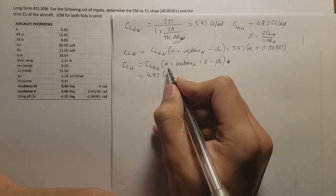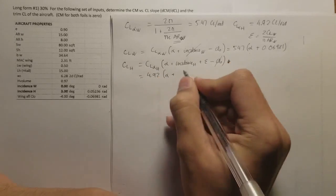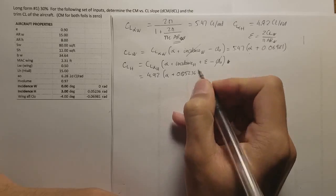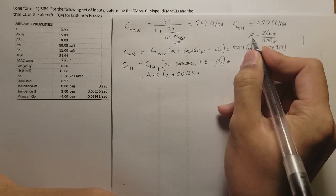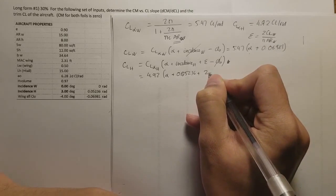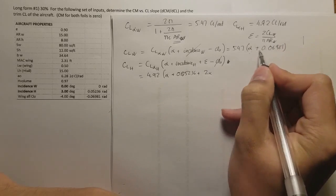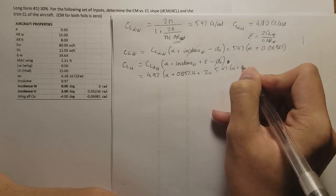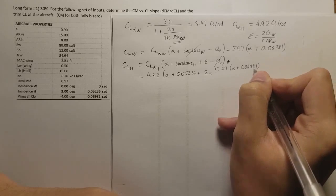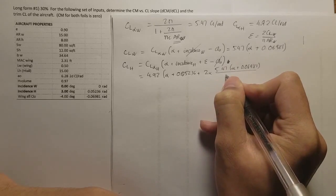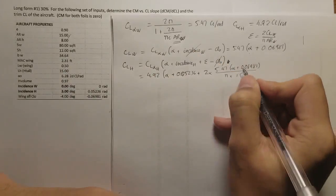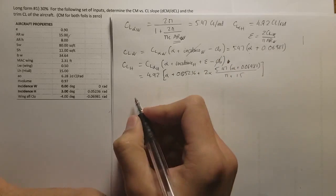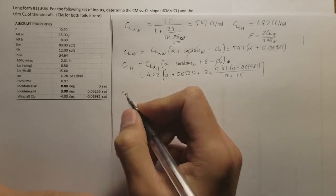Remember all angles must be in radians. The incidence angle of the tail is 0.05236 radians. Putting in the formula for the downwash angle, you get 2 times CL_wing divided by pi times 15 (the aspect ratio of the wing), where CL_wing is 5.47 times alpha plus 0.06981. This gives you the full formula for the lift coefficient of the tail.